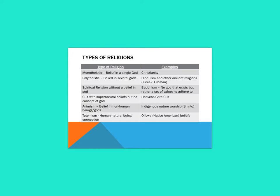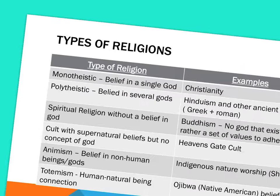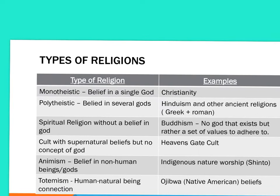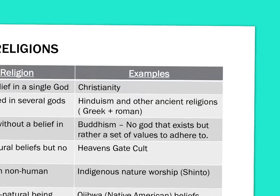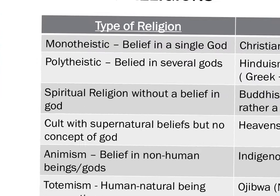The first type is monotheistic — a belief in a single god who governs and gives instructions on how individuals should be living their lives. An example is Christianity. Polytheistic is a belief in several gods; examples include Hinduism and ancient religions such as Greek and Roman, where several gods governed and dictated how individuals should be behaving.